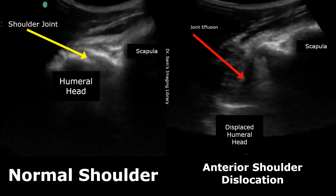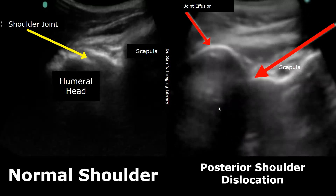This is a case of an anterior shoulder dislocation. We will see joint effusion and a large gap between the humeral head and the scapula — the humeral head is displaced anteriorly. The scapula can be seen up here and the humeral head down here in the image. This is an image of posterior shoulder dislocation.